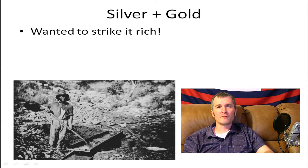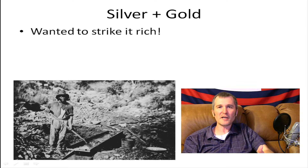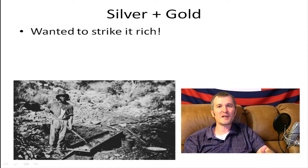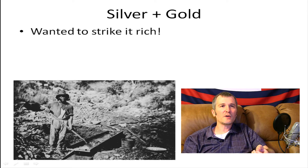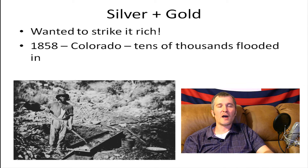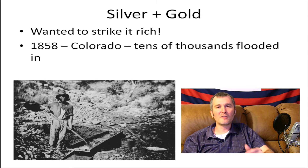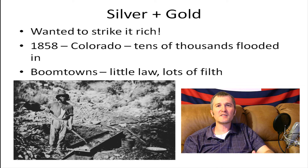A lot of the settlement of the West was driven by this desire to get rich — strike it rich. That's part of the American dream and the pioneering spirit. America represented a new beginning to so many people from all over the world. You see this with the 1849 gold rush to California, and you're going to see lots of other gold rushes and silver rushes — people flooding in. Areas like South Dakota had almost no white settlers until they discovered gold in the Black Hills. Same thing in 1858 in Colorado — they find gold and people flood in by the tens of thousands.